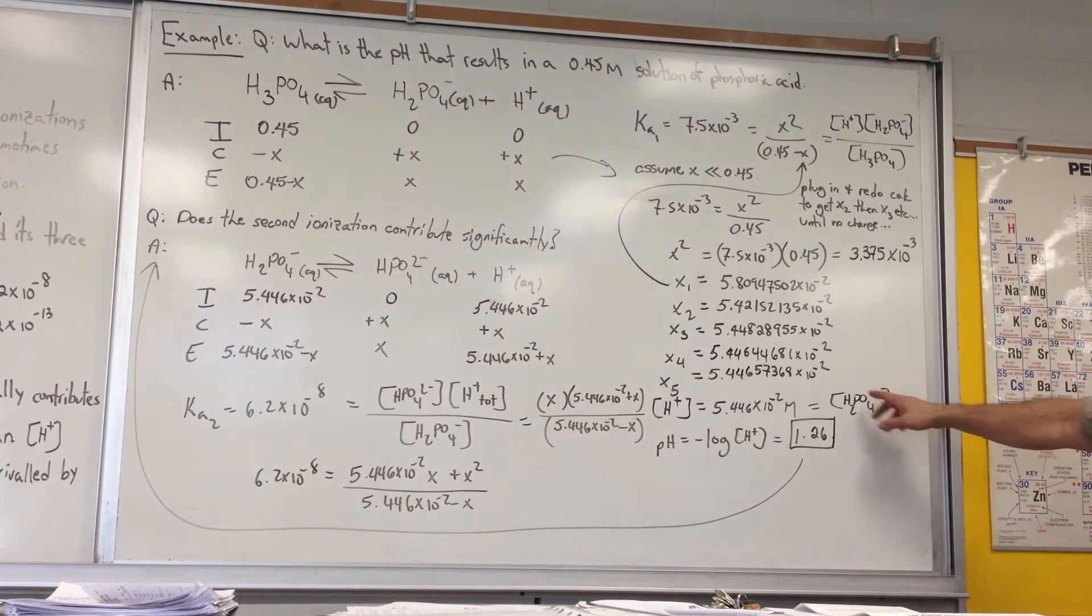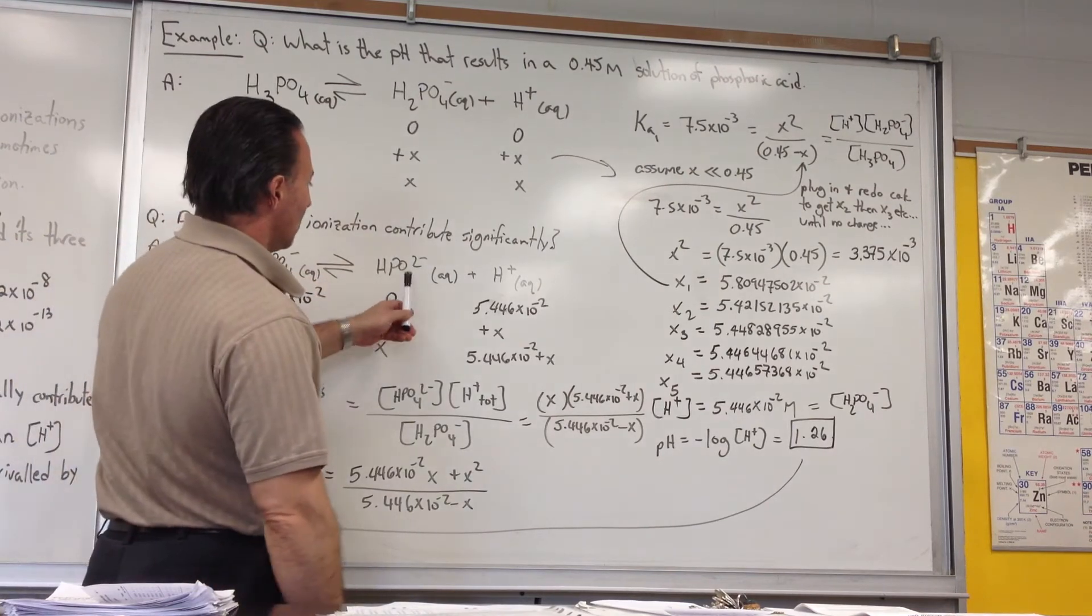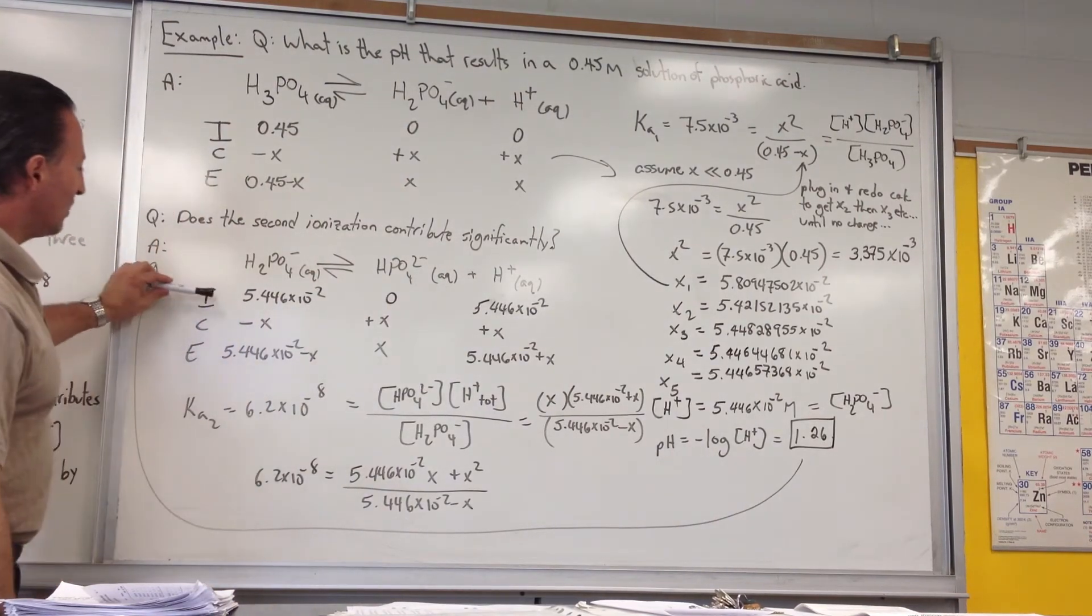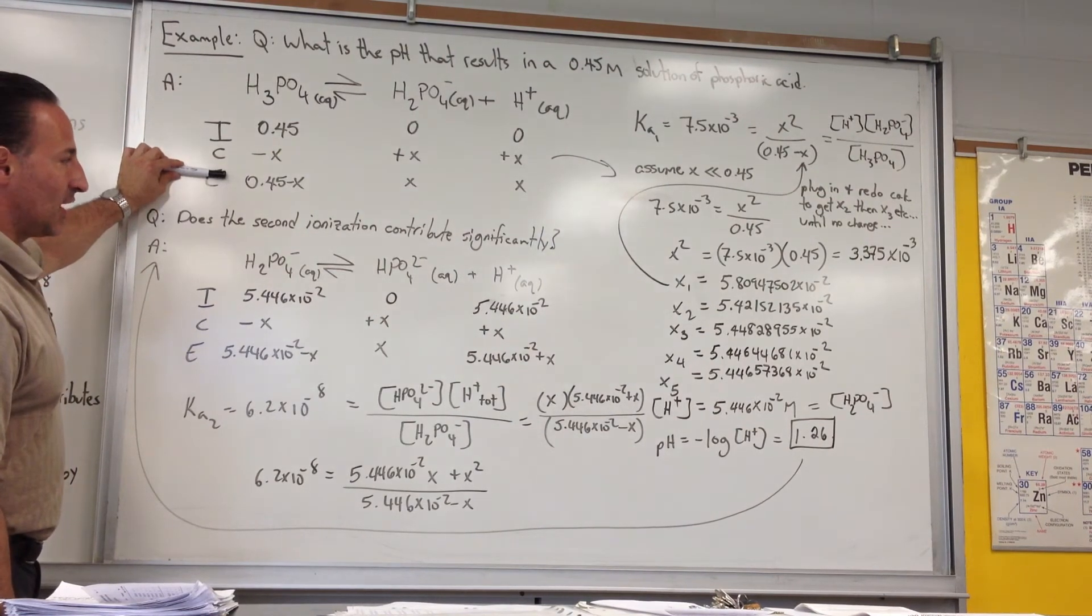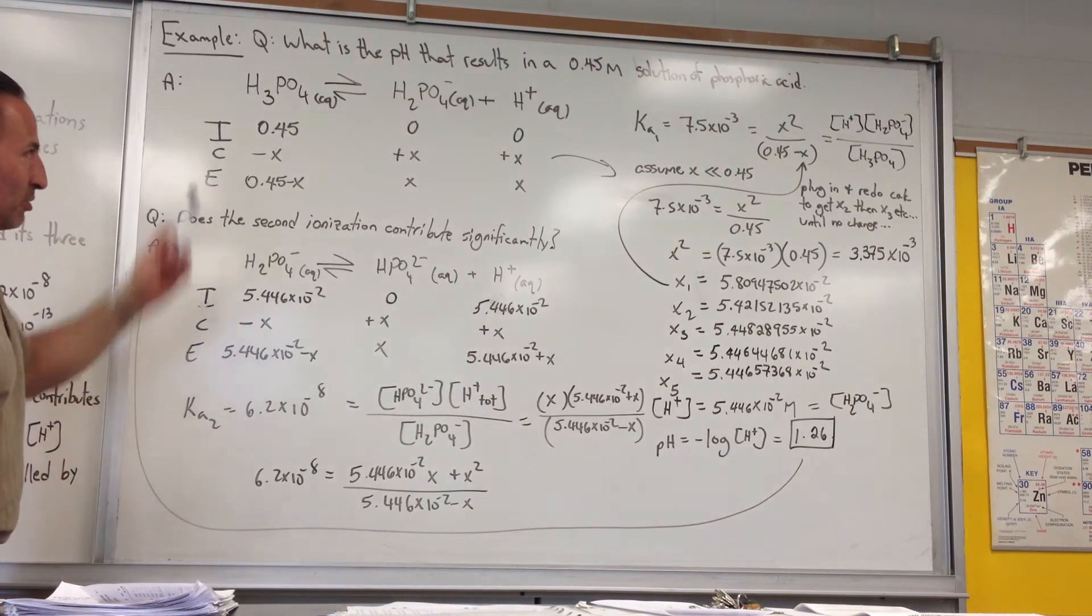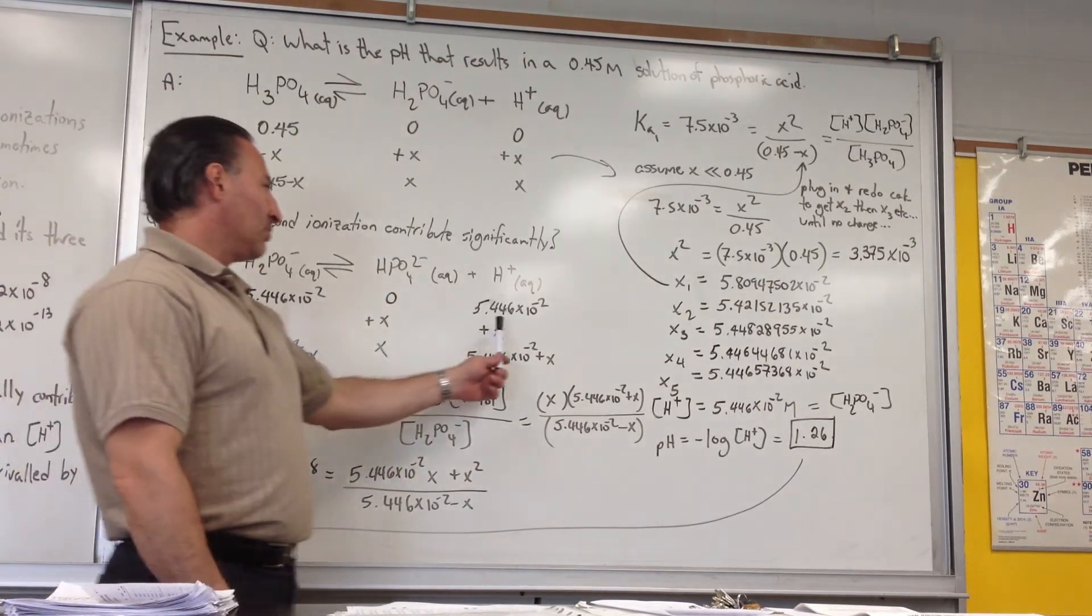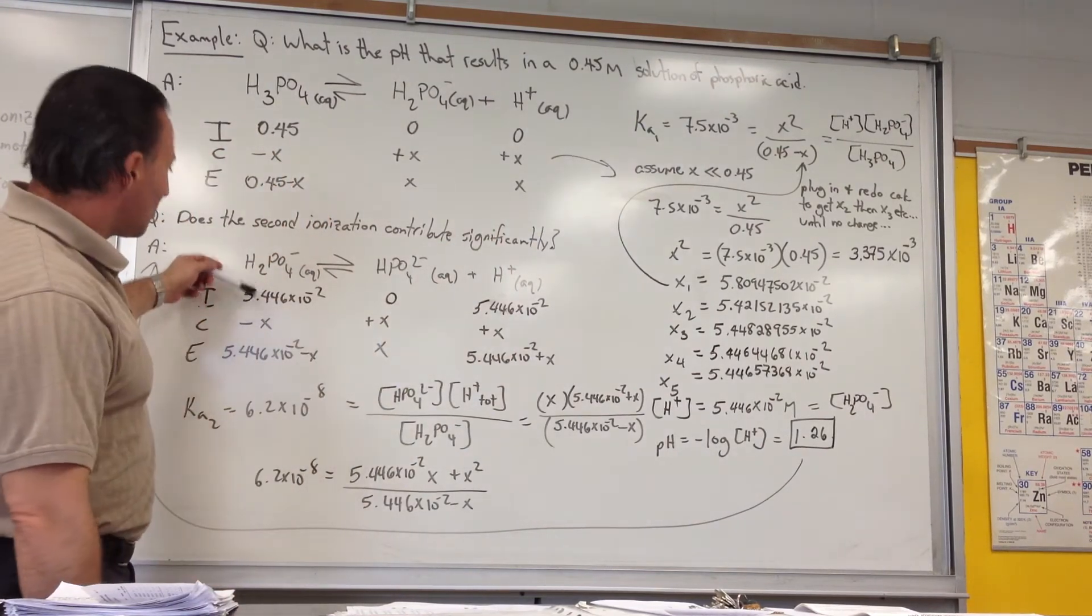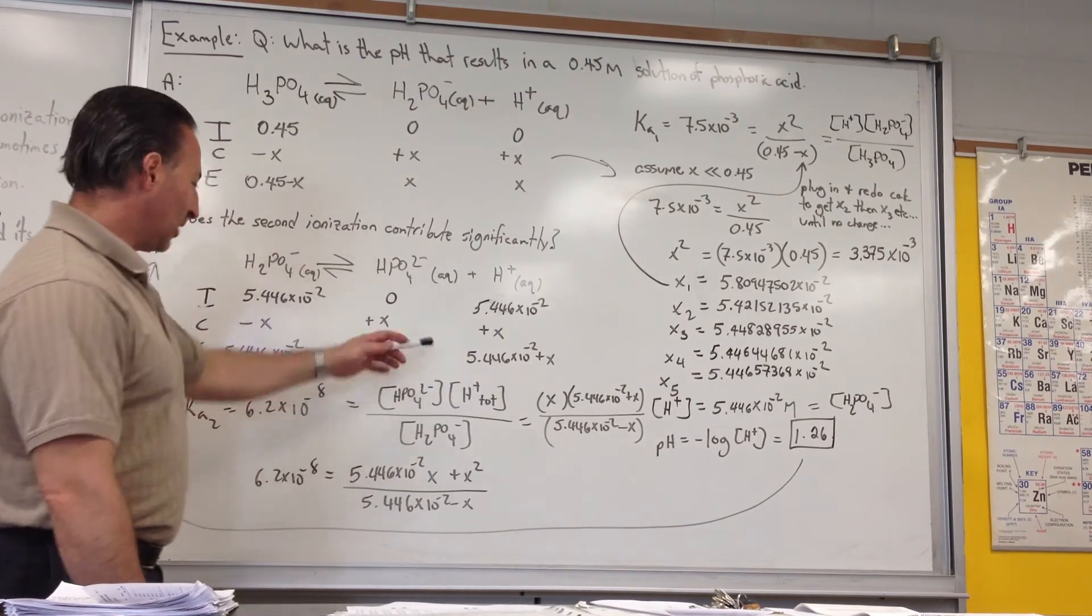So I took the dihydrogen phosphate ion concentration, which is identical to the hydrogen ion concentration from the first dissociation, and I showed how it can also further dissociate. So dihydrogen phosphate can further dissociate into hydrogen phosphate and another proton. And I took all the initial conditions from the final conditions of the previous calculation. We're going to have this much dihydrogen phosphate sitting in solution from the previous dissociation, zero at the outset for hydrogen phosphate, and we have this much hydrogen ion already sitting in solution from the first ionization. And let's assume another amount X of this dissociates, so that we get these equilibrium conditions. We plug them into the equation.